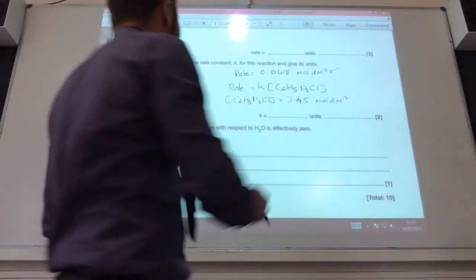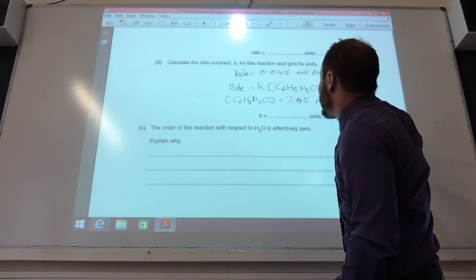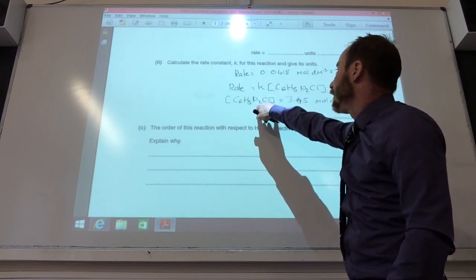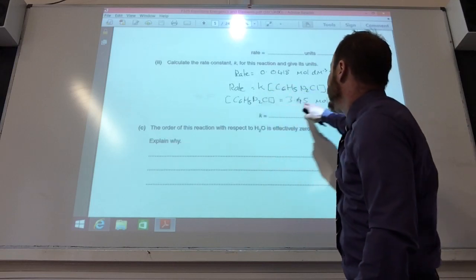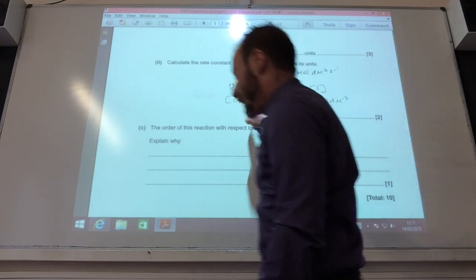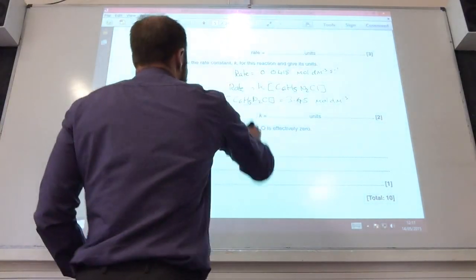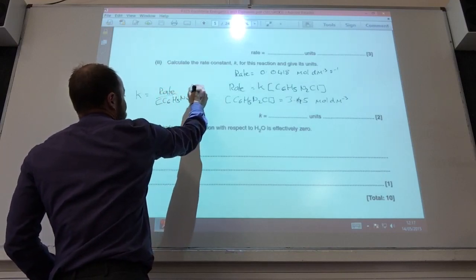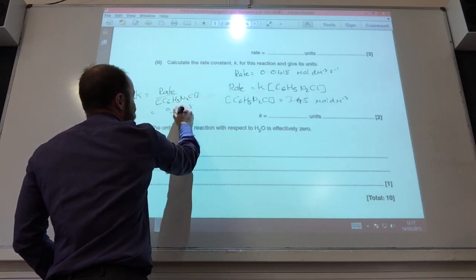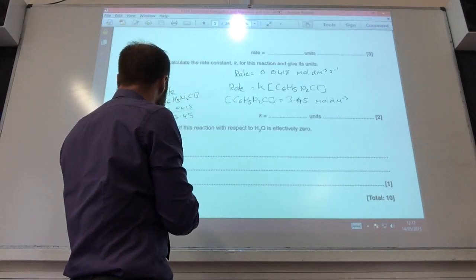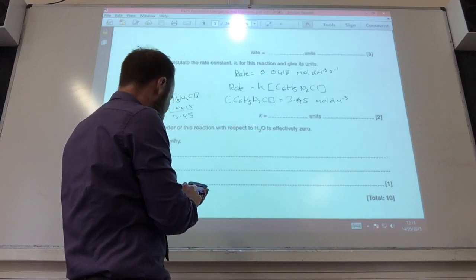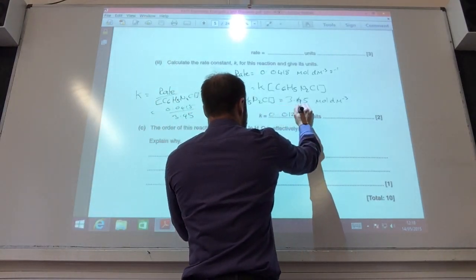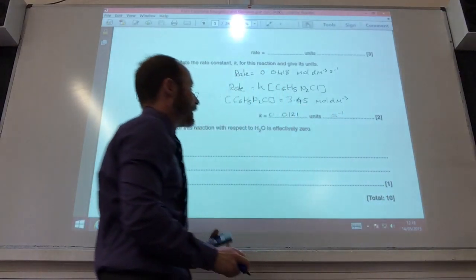So once we've found the rate, we found the rate equals 0.0418 moles per decimeter cubed per second. We go back to the rate equation that they gave us. The rate equals K times that concentration. Read off this concentration from the graph at the time that we took this rate, and we found that to be 3.45 moles per decimeter cubed. So we can rearrange this equation quite easily to find K. K is going to equal the rate over that concentration, which is 0.0418 divided by 3.45 moles per decimeter cubed. That comes to 0.0121, and the units for that is seconds to the minus 1.